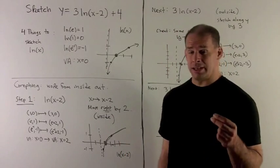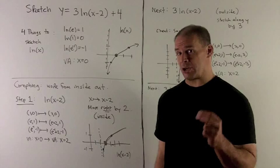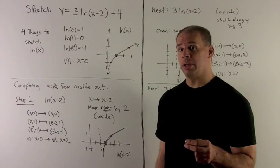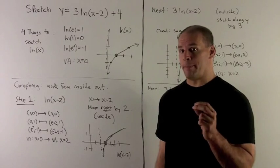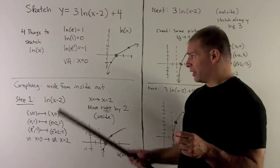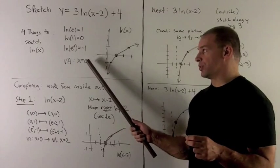First, natural log of e is equal to 1. Natural log of 1 is equal to 0. Natural log of e to the minus 1 is equal to minus 1. And then there's a vertical asymptote of x equals 0.